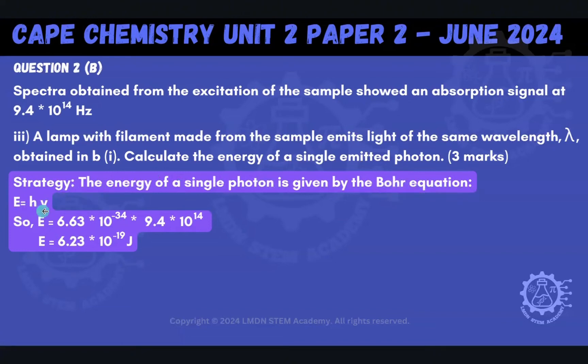So here's our strategy. The energy of a single photon is given by the Bohr equation. So that's E is equal to H times V, where H is Planck's constant and V is the frequency. So because they said it emits the light of the same wavelength, if it's the same wavelength as what we calculated in B, it must have the same frequency as well. Because remember, it was a frequency that we used to find what the wavelength was. And so we can literally just plug this frequency in this equation here for V.